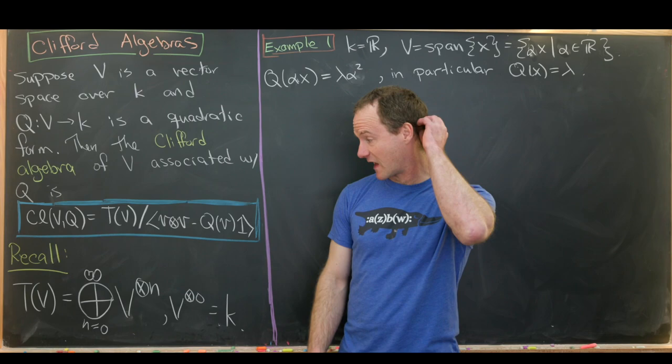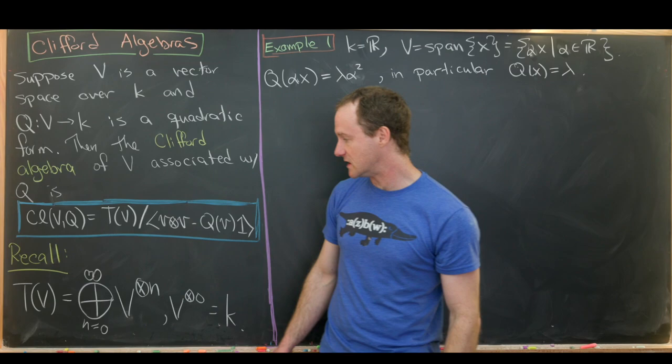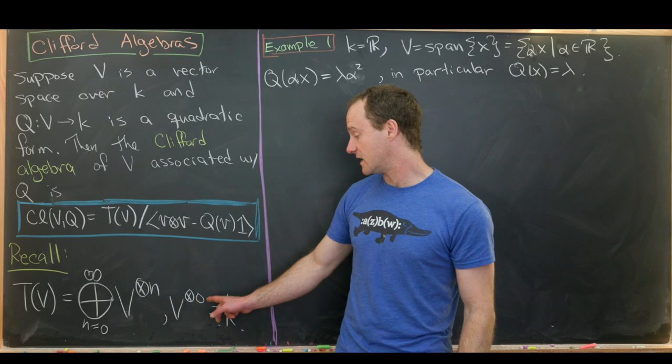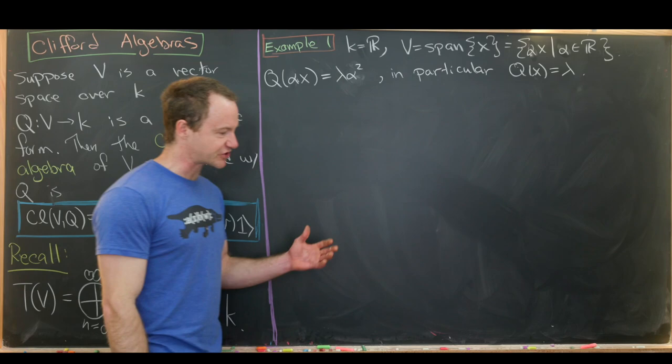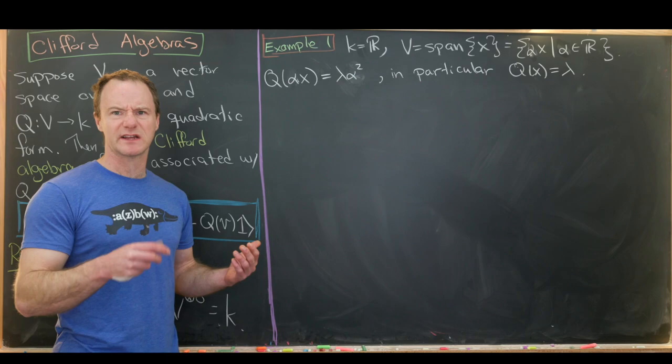Let's recall that the tensor algebra is defined to be the infinite direct sum of all of these tensor powers of V. So V tensor power 2 is V tensored with itself, V tensor power 3 is V⊗V⊗V, and V tensor power 0 is just the ground field K. We're going to start off by looking at a couple of really simple examples, and after looking at these, we'll look at some general results that will allow us to classify these types of things.